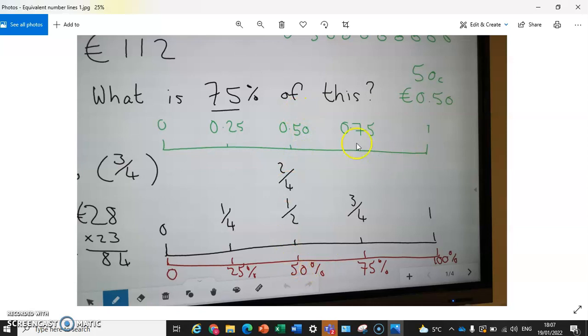0.5 is the same as 50%, again you have the 5, 0 and the 5, 0. And 0.75 is the same as 75%, 75 and 75.